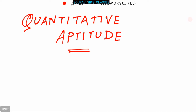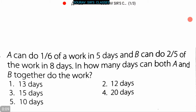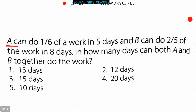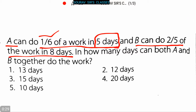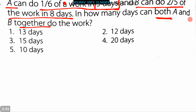Hello students, welcome to Sorosa Classes. Today our topic is quantitative aptitude and here some questions are given we have to solve. Now let's start. A can do one-sixth of a work in five days. B can do two-fifths of the work in eight days. We have to find out in how many days can both A and B together do the work.